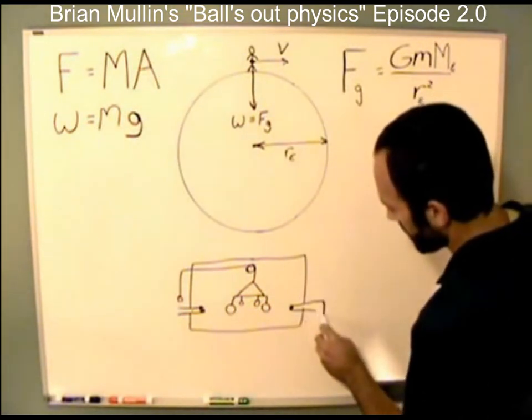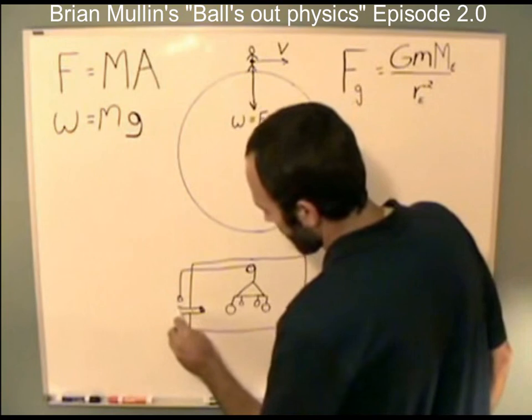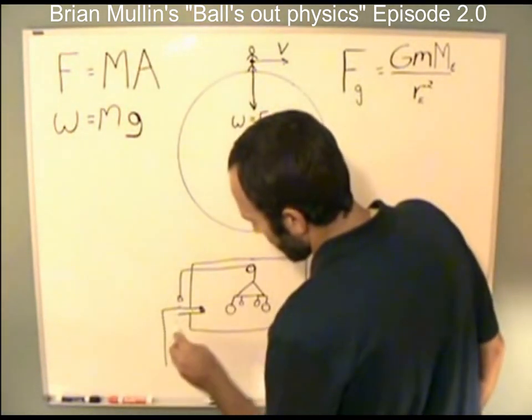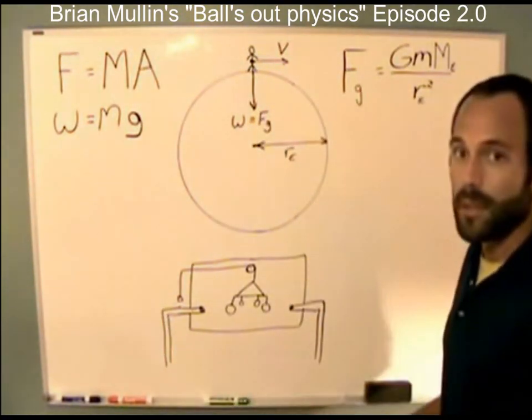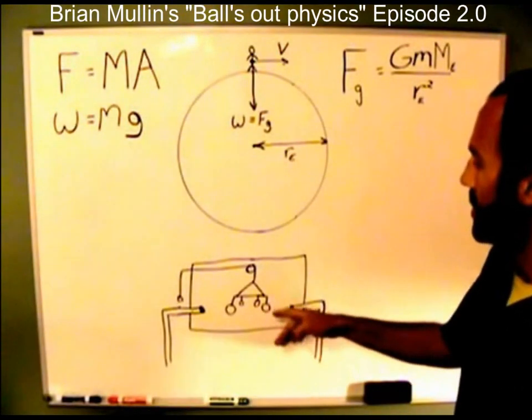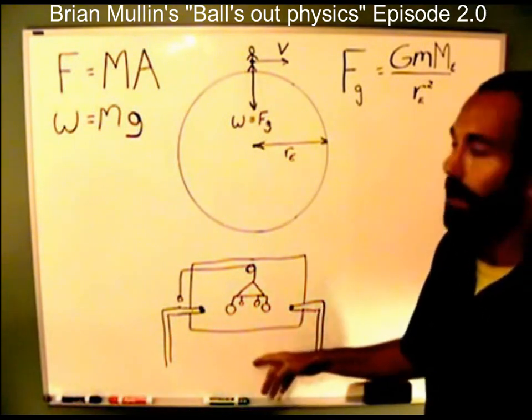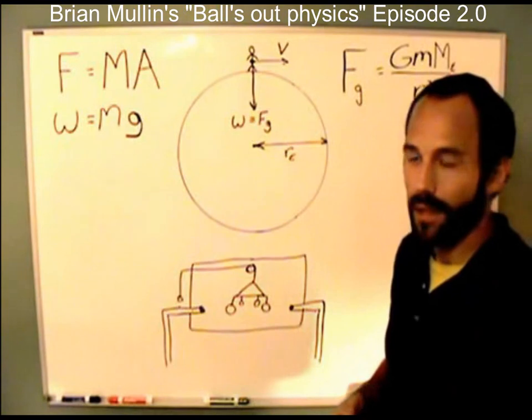So he somehow set up some telescopes that went back to his house - keep his house off the board, just assume his house is down here somewhere - so he could observe this experiment. And somehow he calculated big G from this.